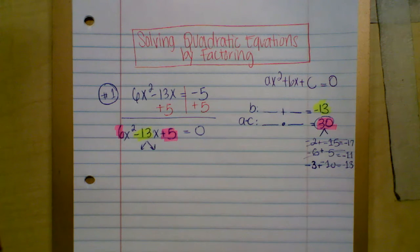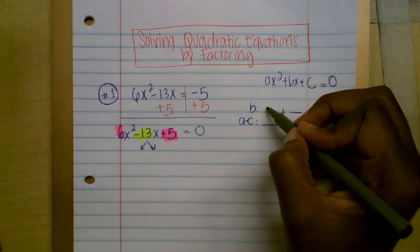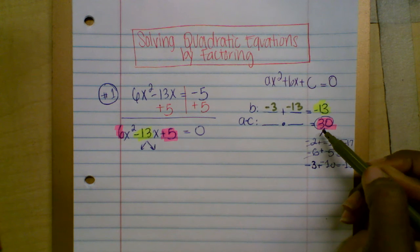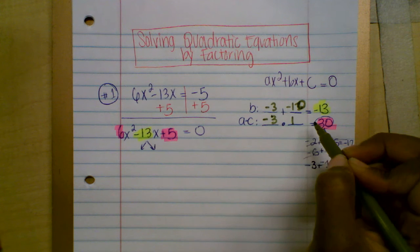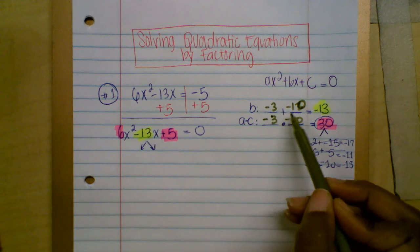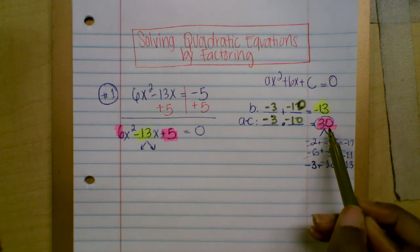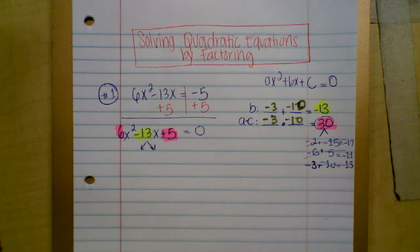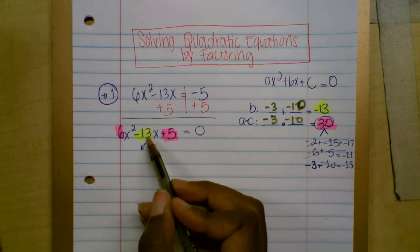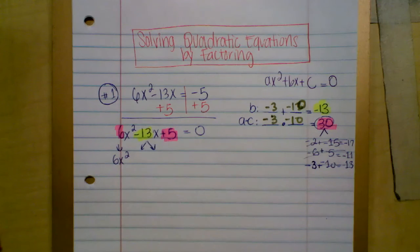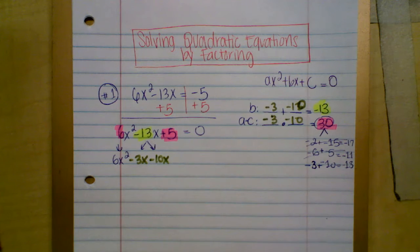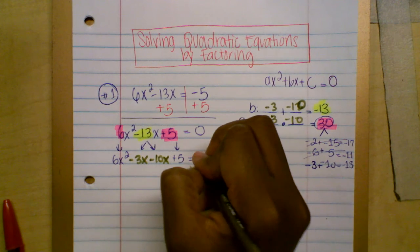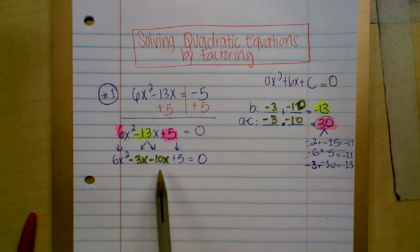So I found two numbers that add to negative 13 and multiply to positive 30, which are negative 3 and negative 10. I'm going to use these two numbers to replace the middle term. So I'll write: 6x squared minus 3x minus 10x plus 5. Now I can use either the box method or by grouping.